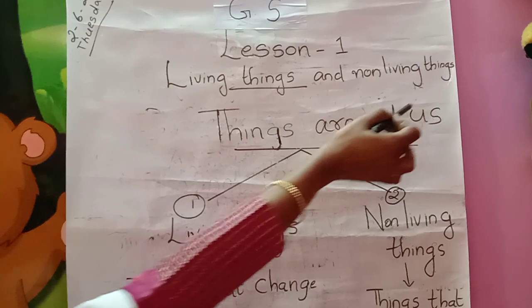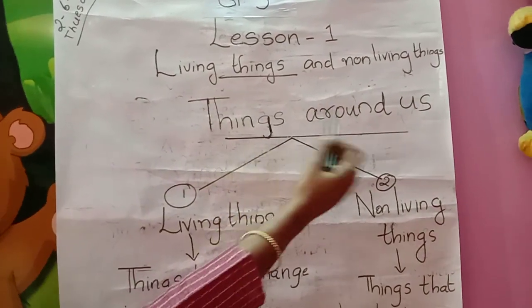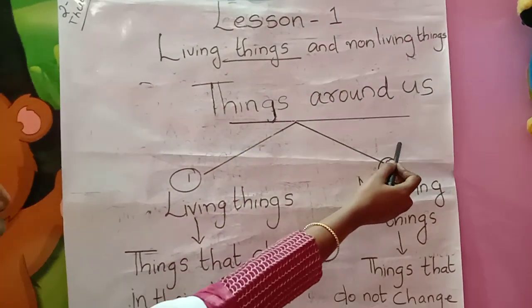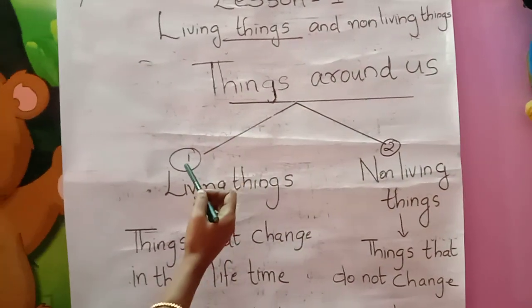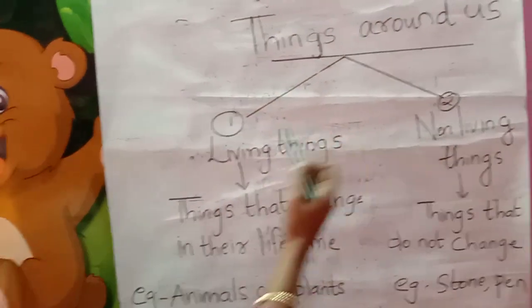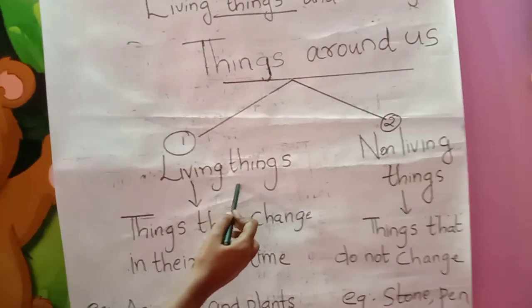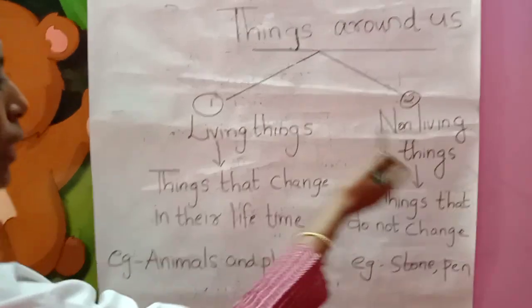In this chapter we study about things around us. Things can be mainly classified into two categories: Number one, Living Things, and Number two, Non-Living Things.